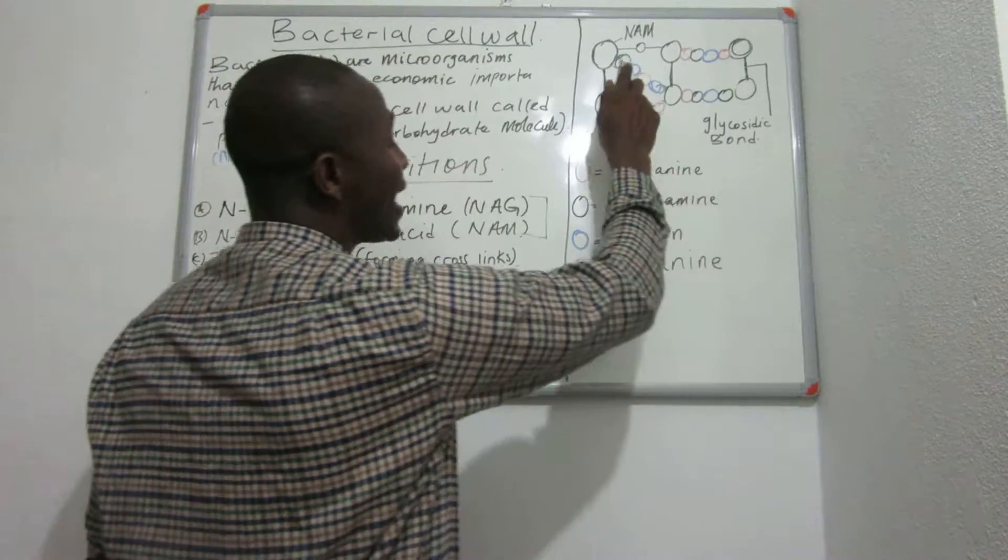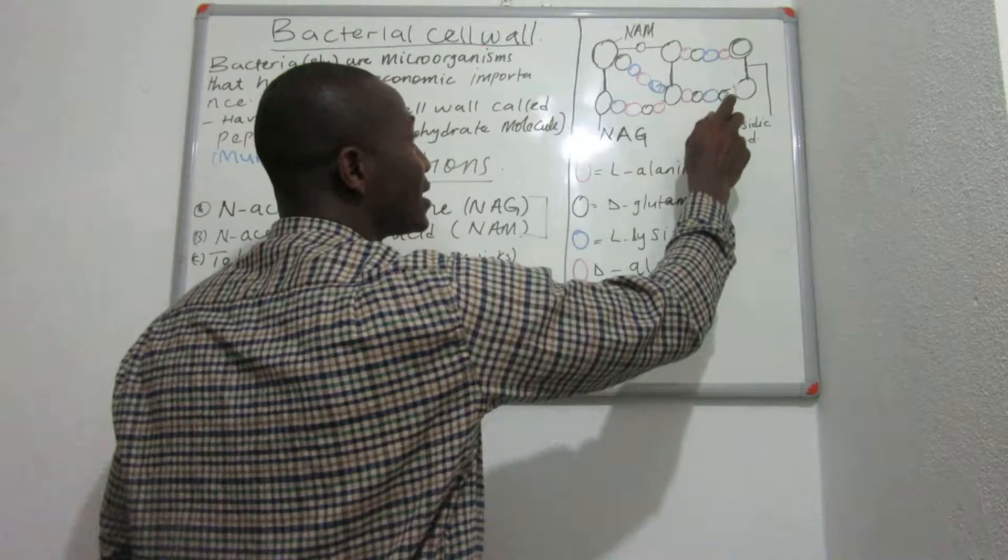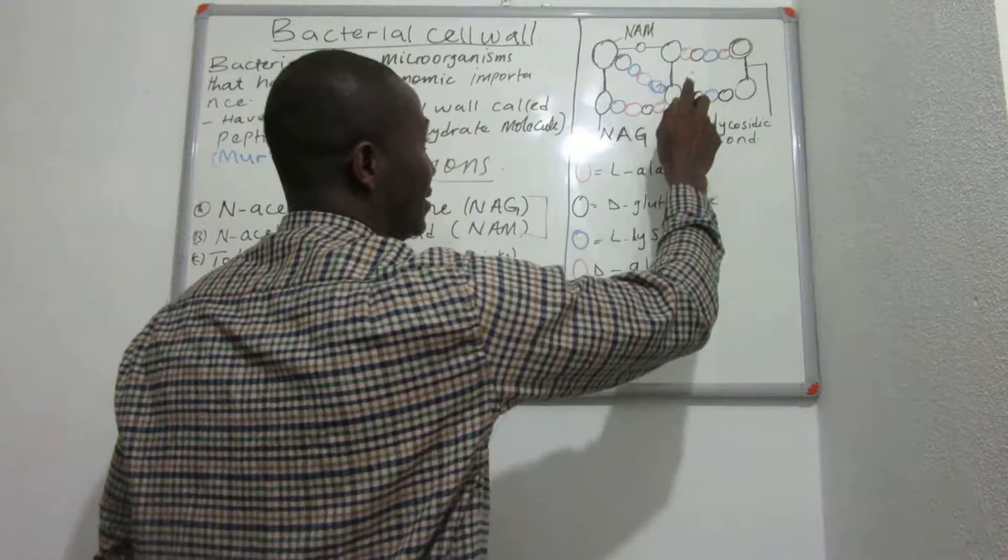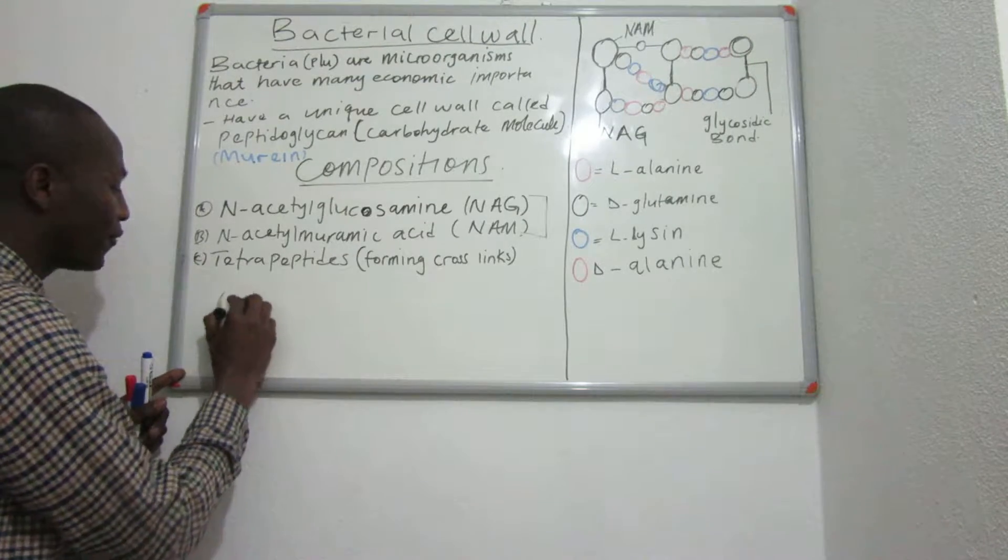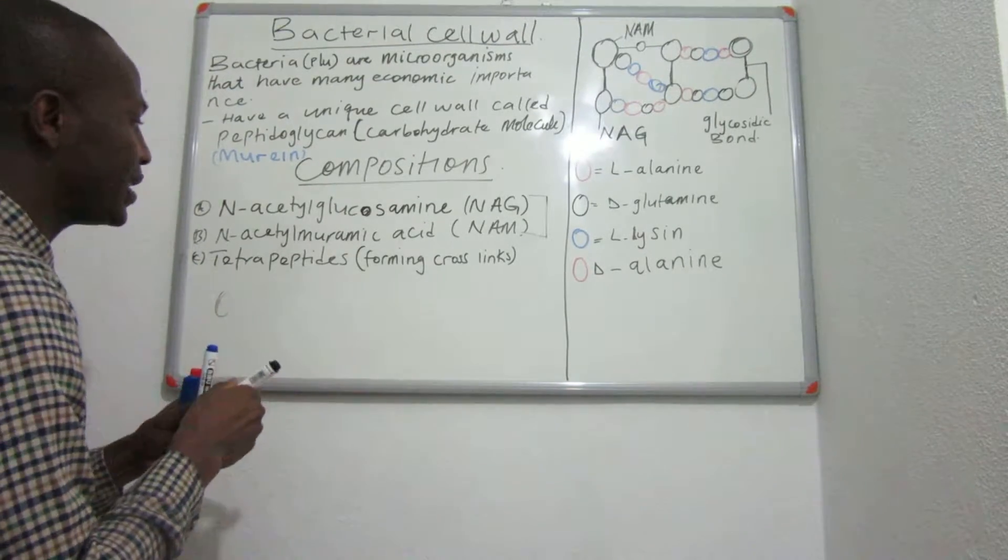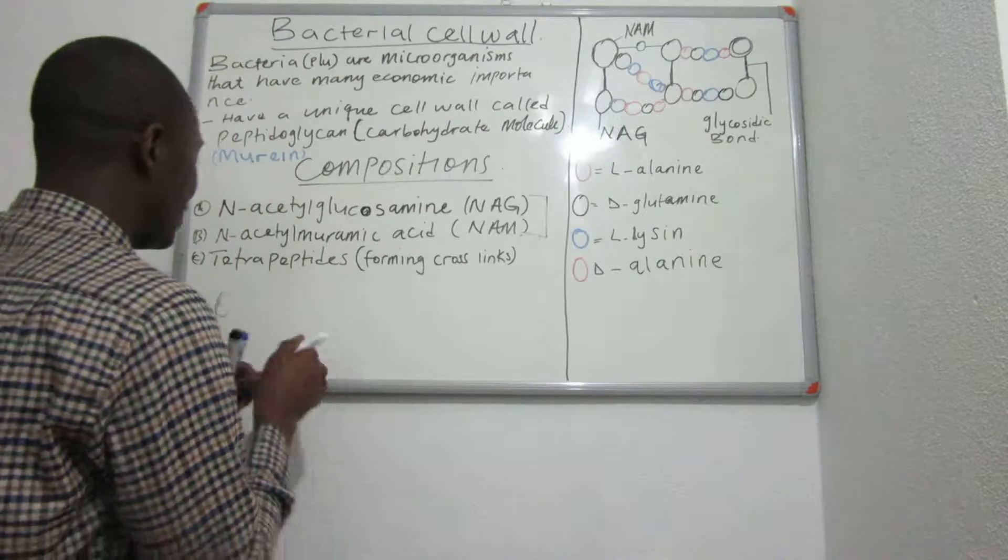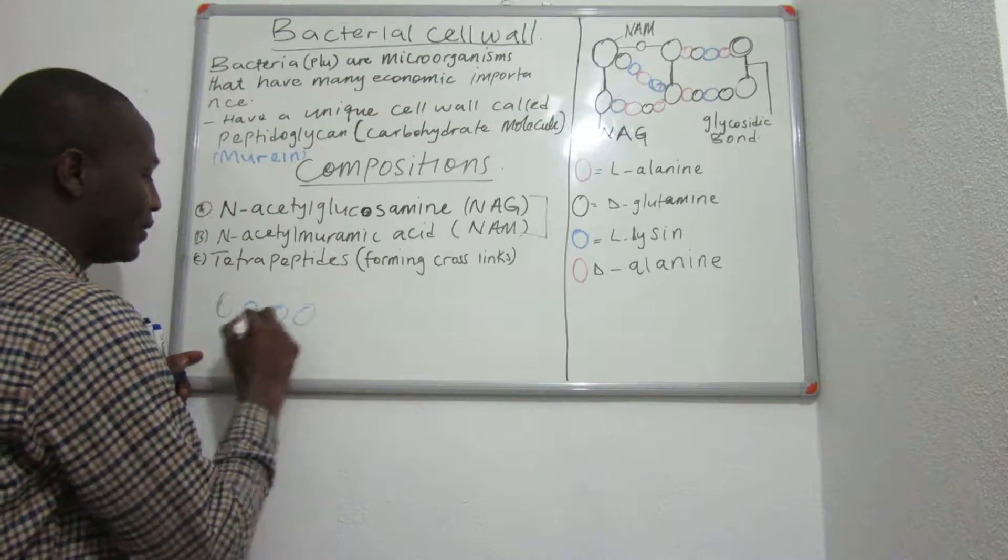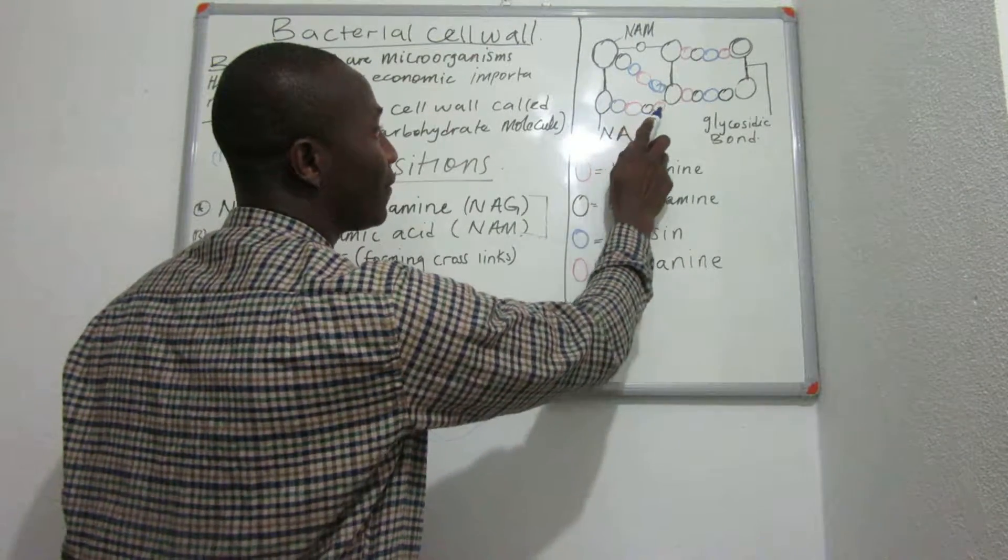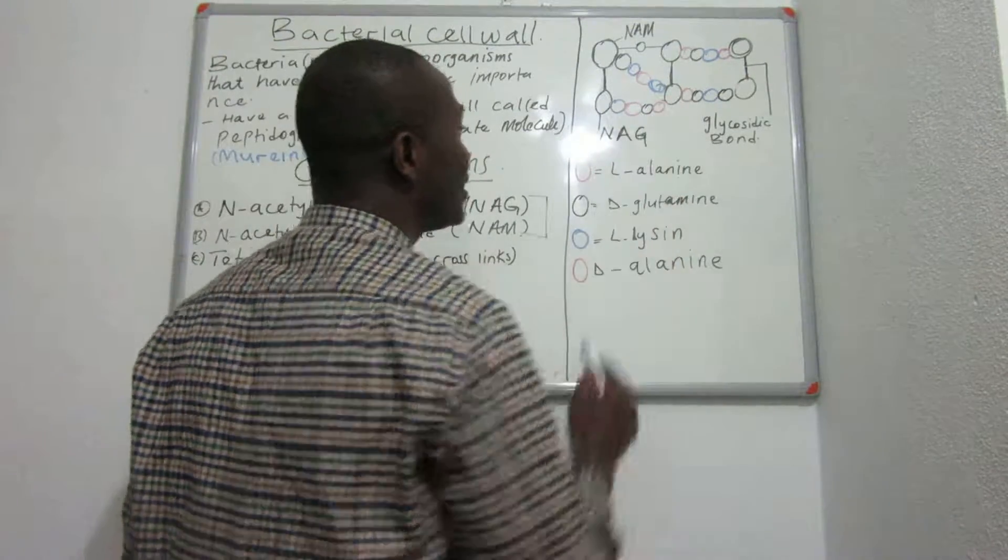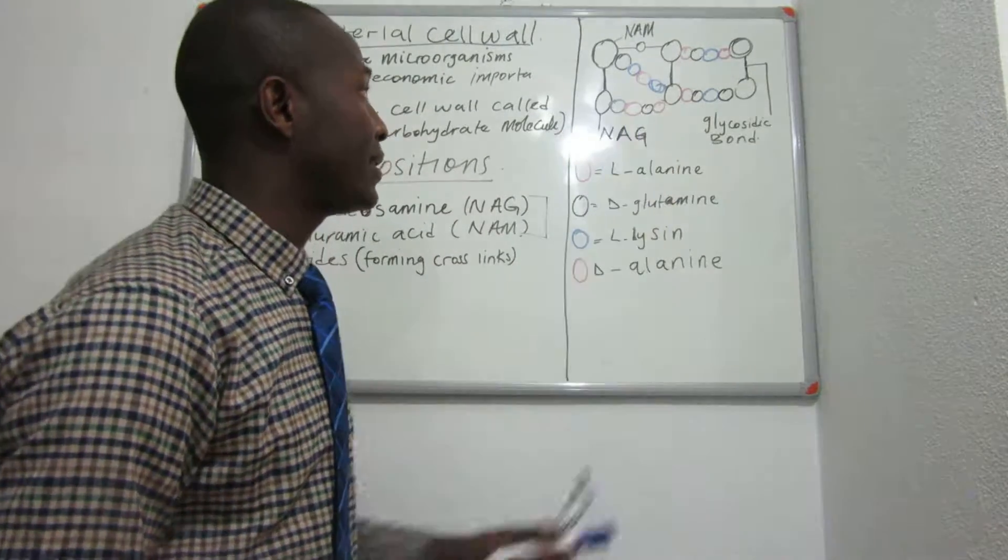You will see that there is a cross-link between the NAM molecules that forms the tetrapeptides. Tetrapeptides come from this term: four main peptides are joined together. So we call it tetrapeptides, four main molecules, different ones. As you can see them here, it's one, two, three, four. These are four different peptides that form.